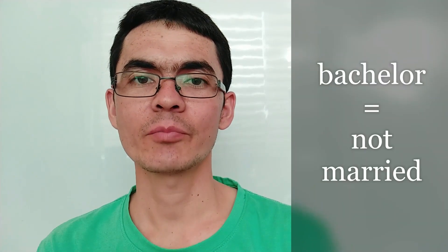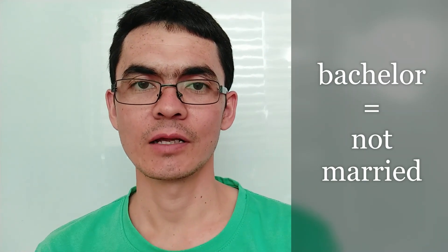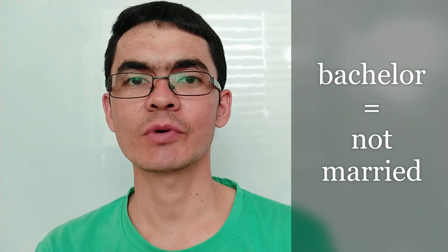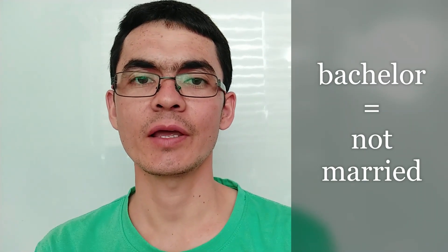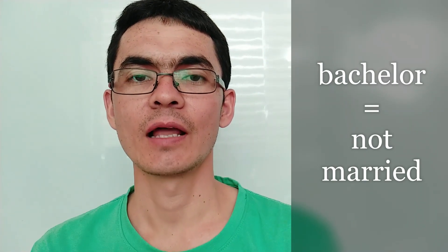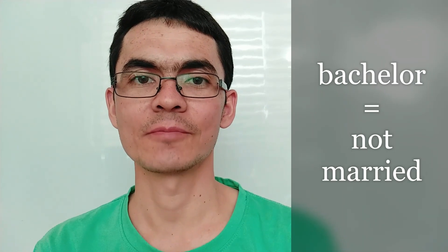As I listed these words one by one, I'm going to explain the meaning and give examples related to each word. The word 'bachelor' has lots of meanings — one of its meanings is not married, single.